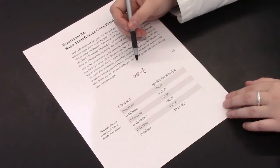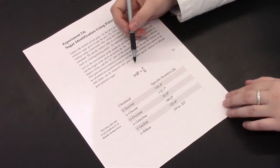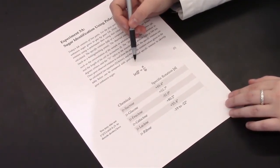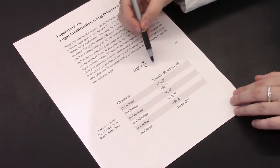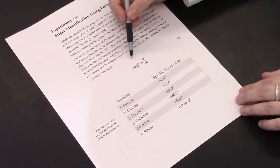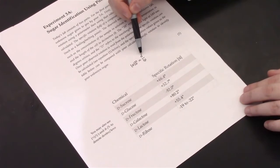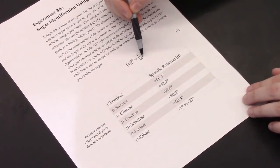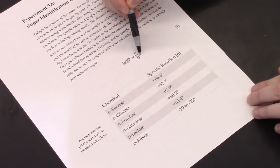When you find your observed optical rotation value, you are able to solve for the specific rotation using equation 1. Divide this observed optical rotation value by the concentration of your solution and the length of the tube.